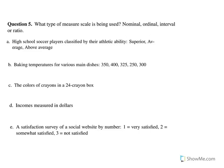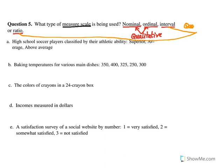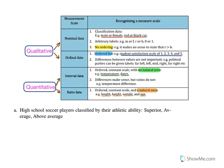In this question we need to check what type of measure scale is being used. Remember, measurement scales include nominal, ordinal, interval, or ratio. Ordinal and nominal belong to qualitative data, while interval and ratio belong to quantitative data. You can always refer to a table to remind you of these things when solving questions of this sort.